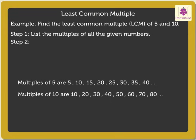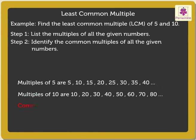Step 2: Identify the common multiples of all the given numbers. The common multiples of 5 and 10 are 10, 20, 30, 40 and so on.